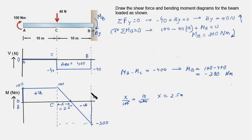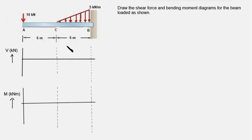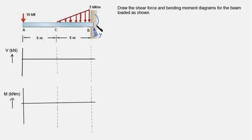Now we move on to drawing shear force and bending moment curves for a cantilever beam acted upon by UVL. This cantilever beam has UVL acting between point C and the fixed end, with a load intensity of 5 kilonewtons per meter at the highest point, and a point load of 10 kilonewtons at the free end. We must determine the reaction force BY and moment MB at the fixed support.